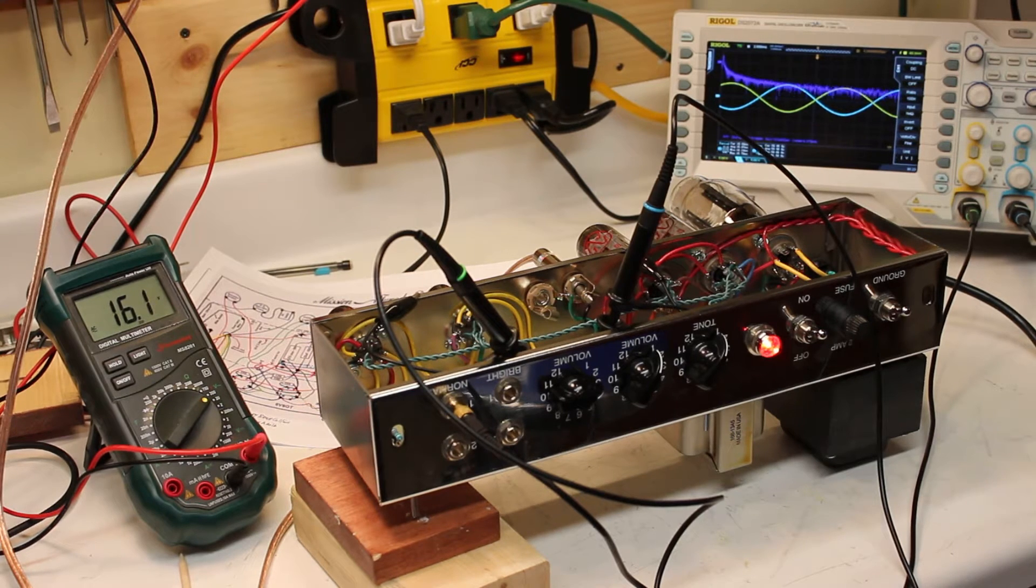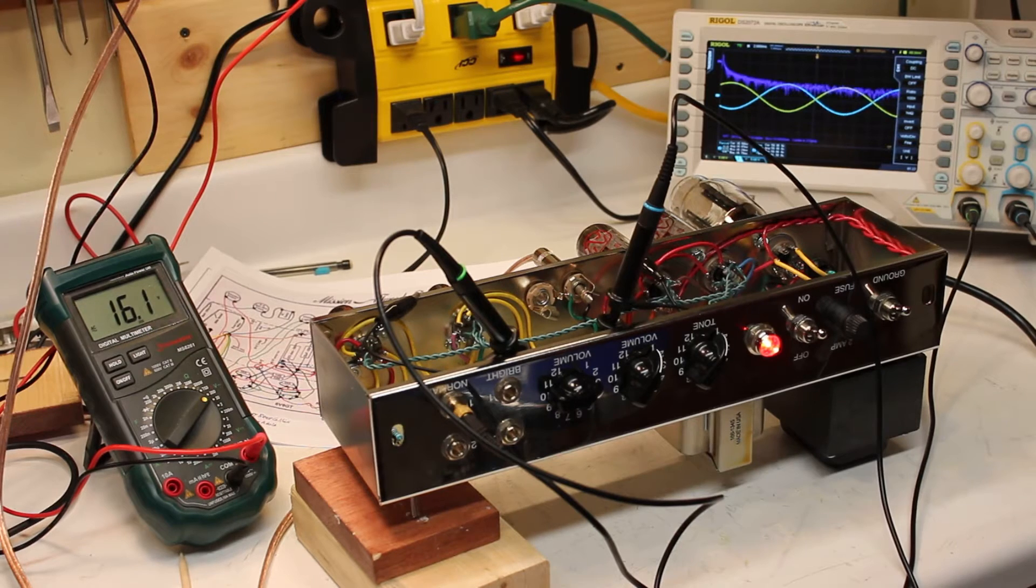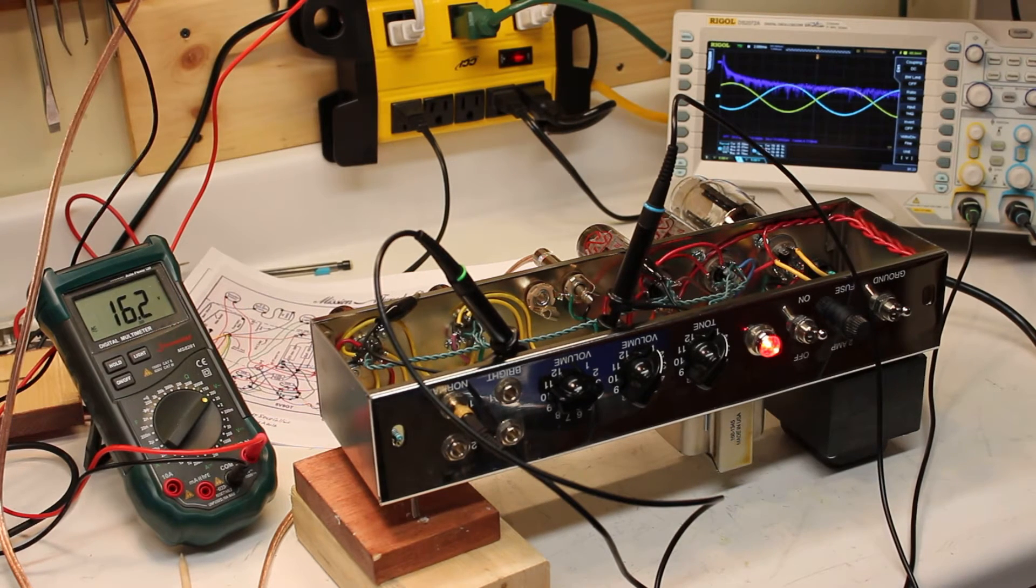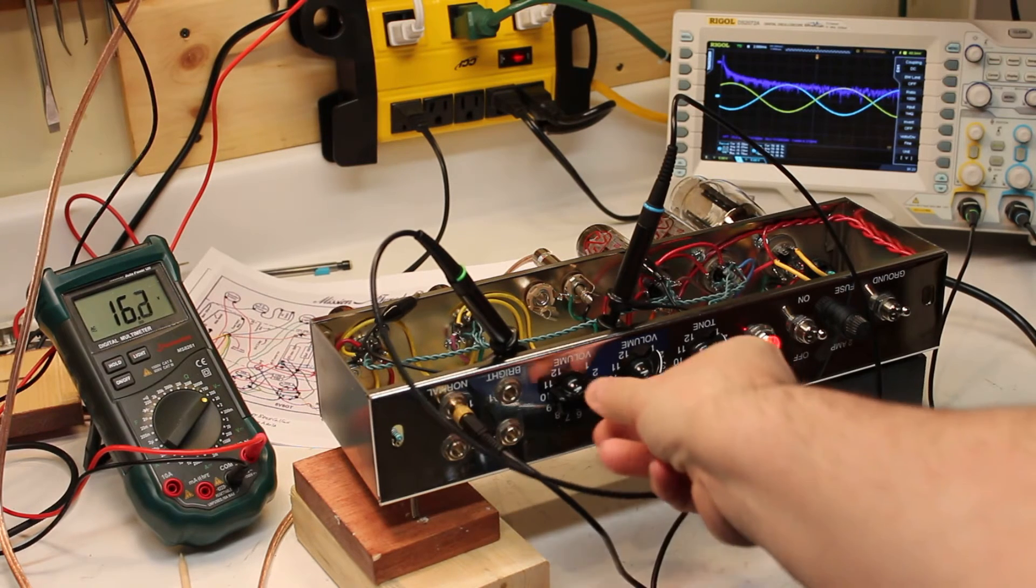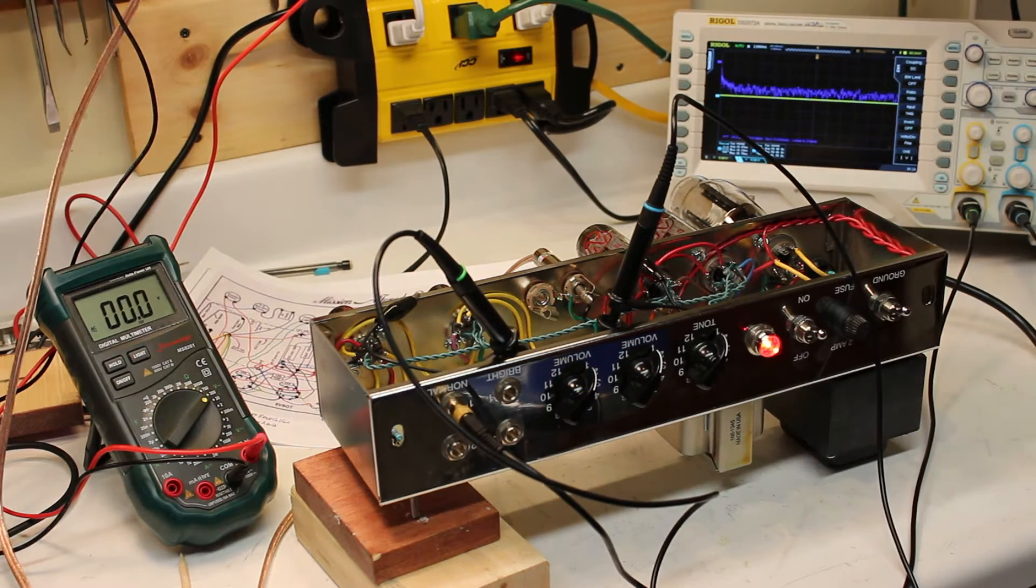But one of the cool things and what's kind of legendary about the 5E3 is that there's an interesting interplay that happens between the two volume controls. I just wanted to show that real quick. So what's happening is I'll turn this down. So the volume is all the way off.